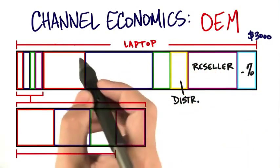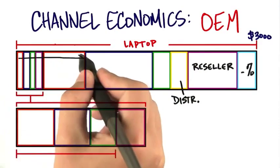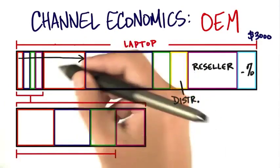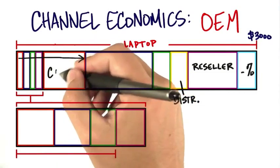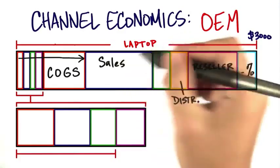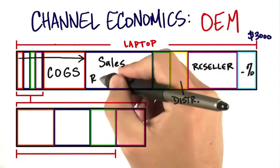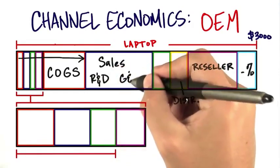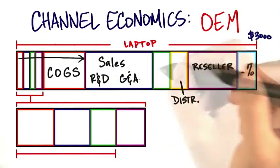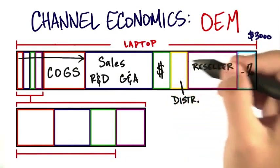The manufacturer of the laptop had their cost of goods — sometimes abbreviated COGS — which include manufacturing costs, components, etc. And they had their sales costs, their R&D costs, and their general and administrative costs. And finally, after all that, they make a profit.